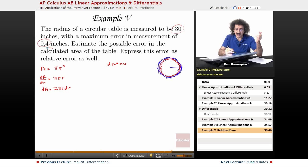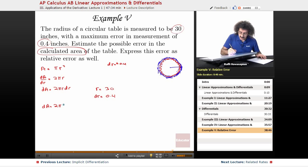This dr is the error in the radius. dA is going to be the error in the area. That's what they're asking. Estimate the possible error in the calculated area. So we're actually going to express it as a differential. So here, r equals 30, dr equals 0.4. Therefore, dA is equal to 2 times π times 30 times 0.4.